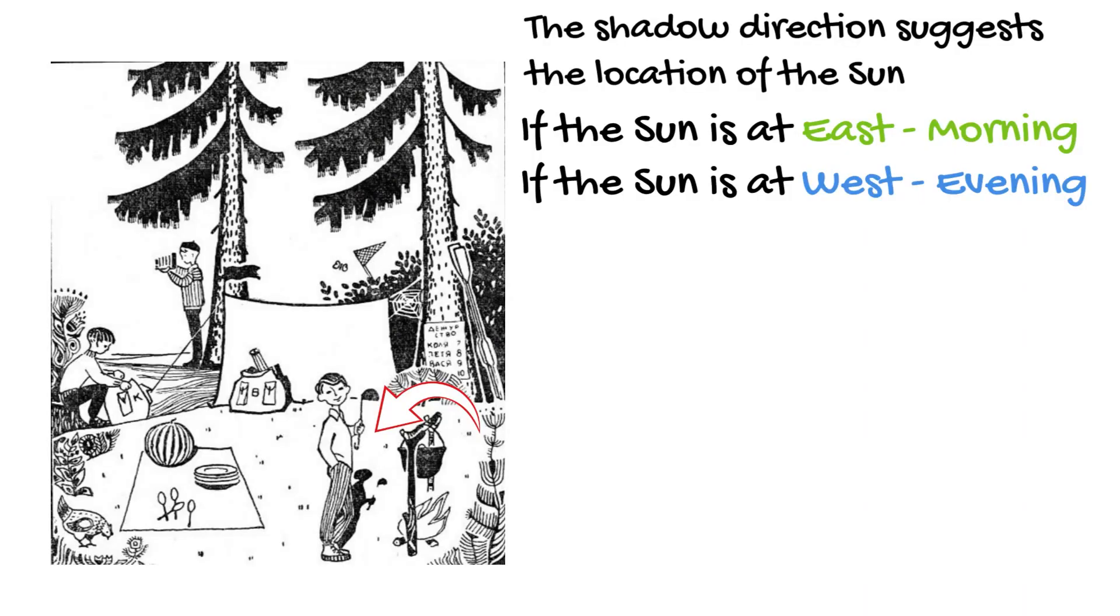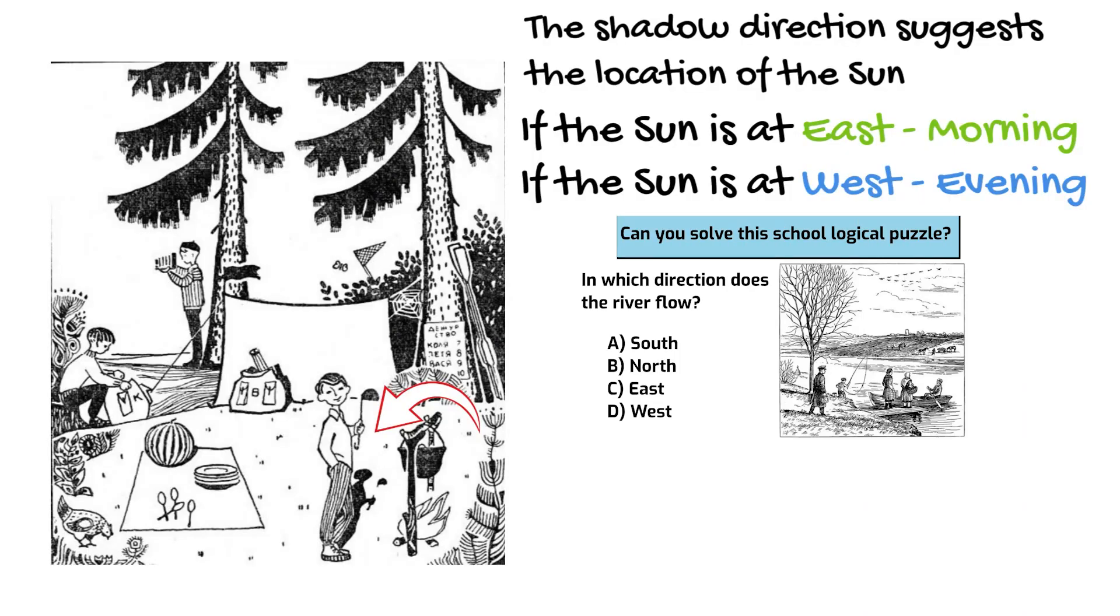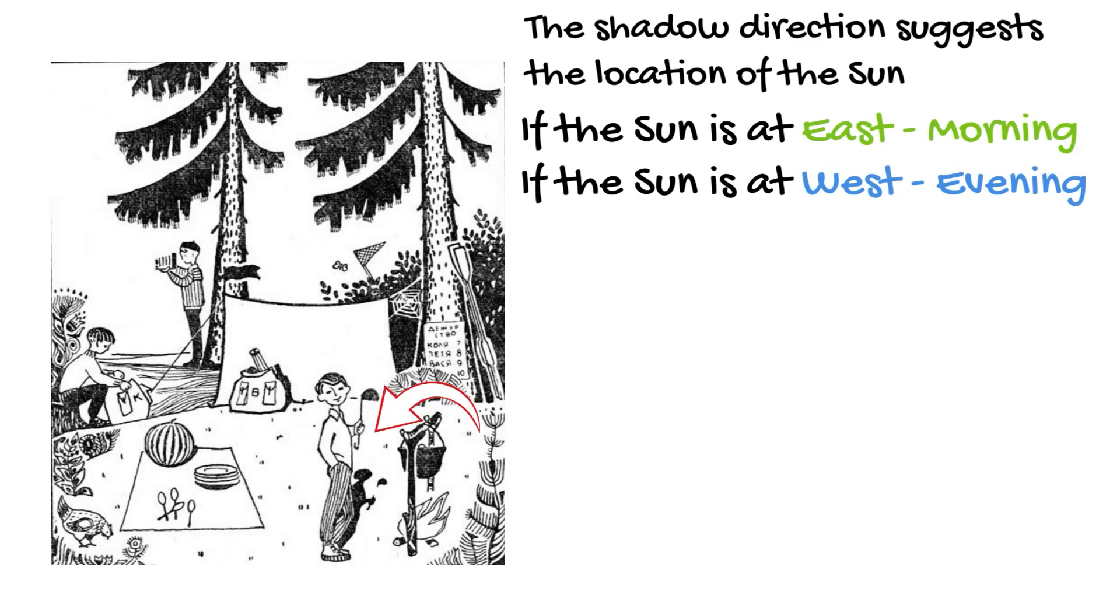Those who watched the other logic puzzle, by the way, if you didn't, check it out. It's quite cool. Link in the description. They know that, for instance, the flight direction of crane flocks can suggest the location of South and North. But here, we don't see anyone in the sky. What is the trick?